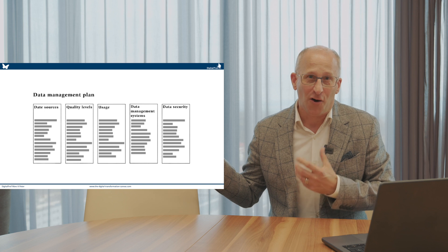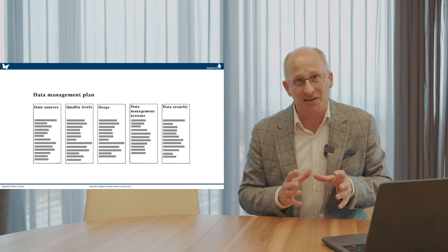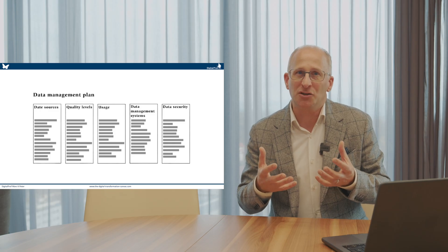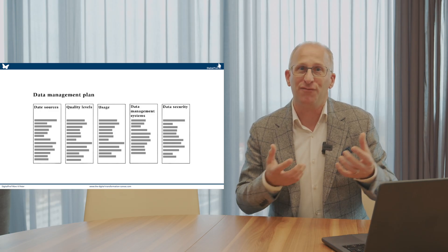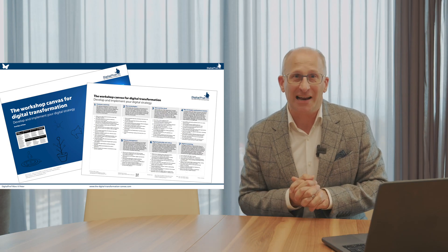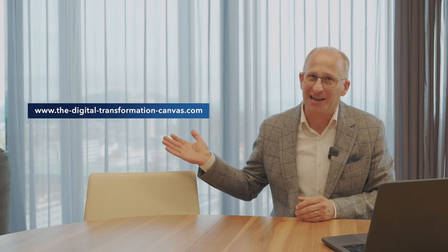At the core of that is data. We already spoke about the importance of having a data management framework that provides a holistic view of what data is available, at what quality levels, and where it is currently used, so we can create a data management plan that will improve the quality of our data for AI use cases. I hope that you will take advantage of the Digital Transformation Canvas and the previous 17 episodes. I wish you all the best in your AI digital opportunity identification workshop. Further information is available on digitaltransformationcanvas.com.